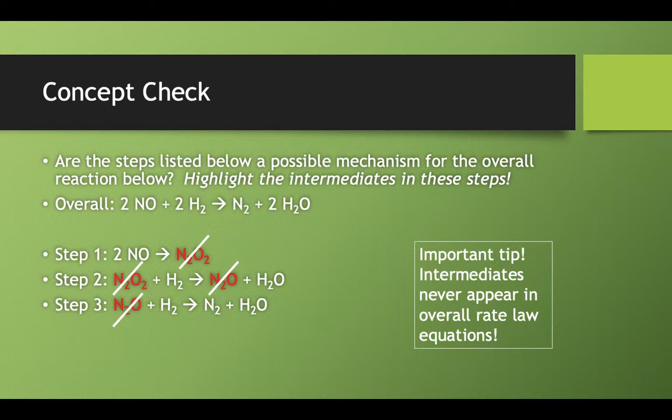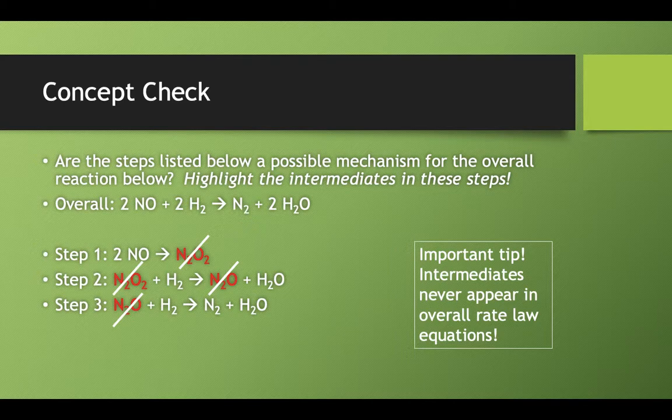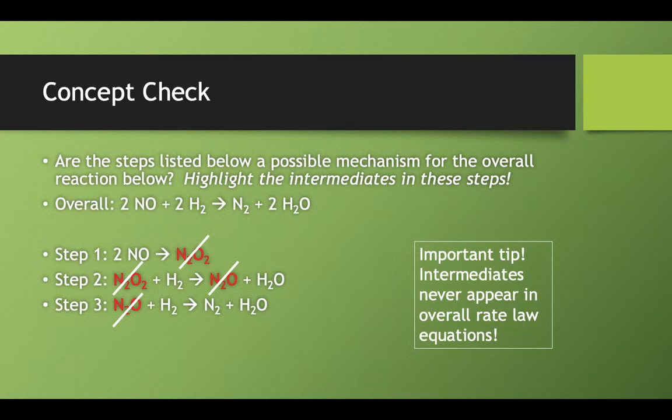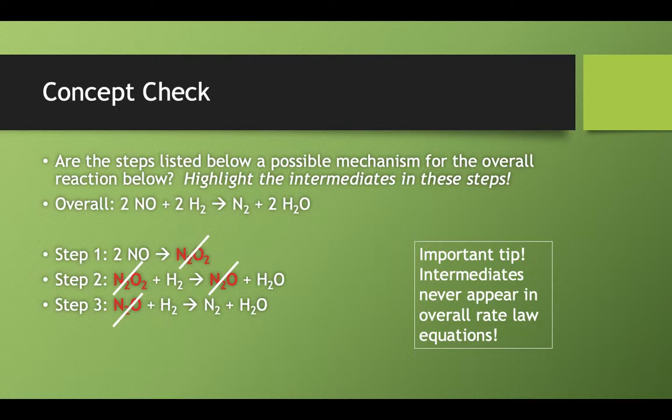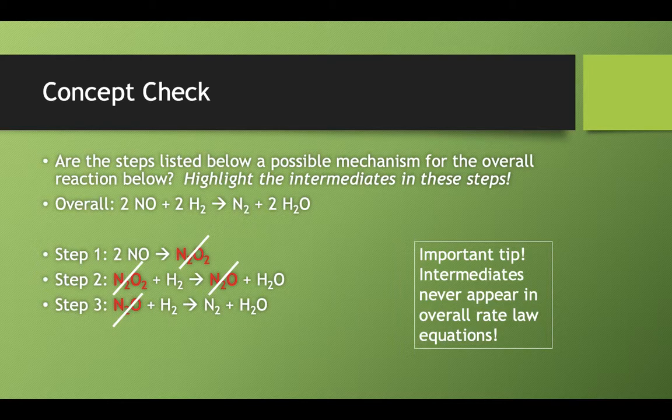They can produce one nitrogen molecule and two molecules of water, one water molecule from step two and one water molecule from step three. This is a possible mechanism. It works because the steps add together to equal the overall equation.